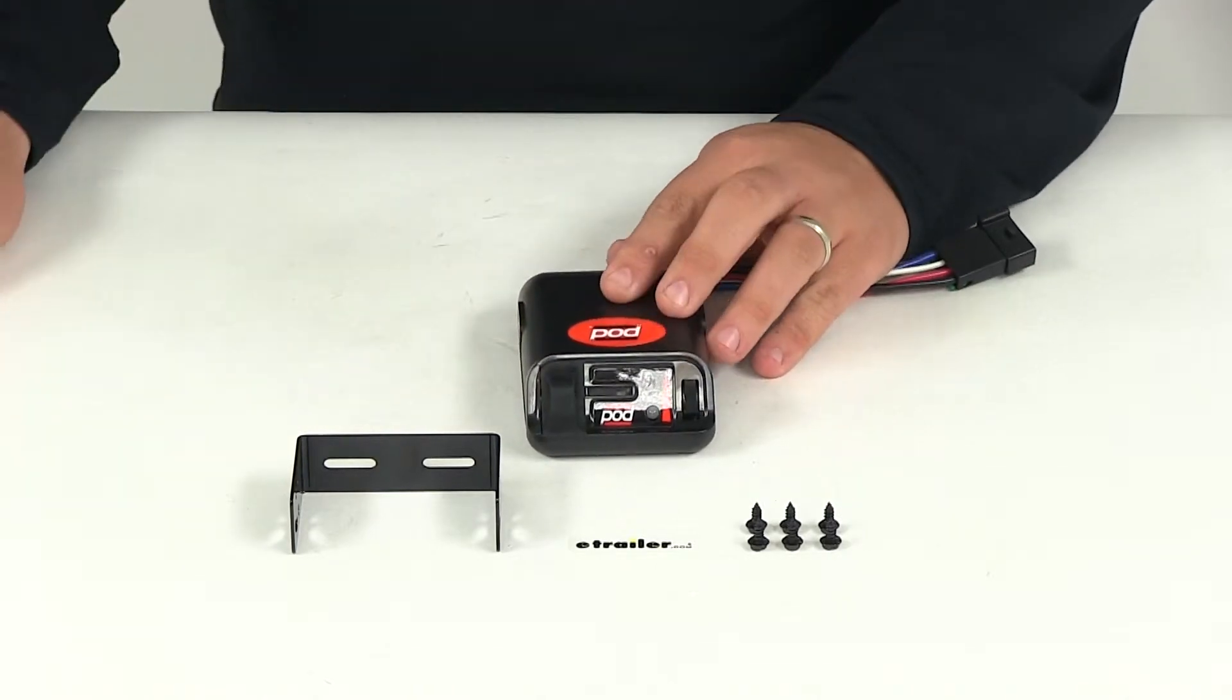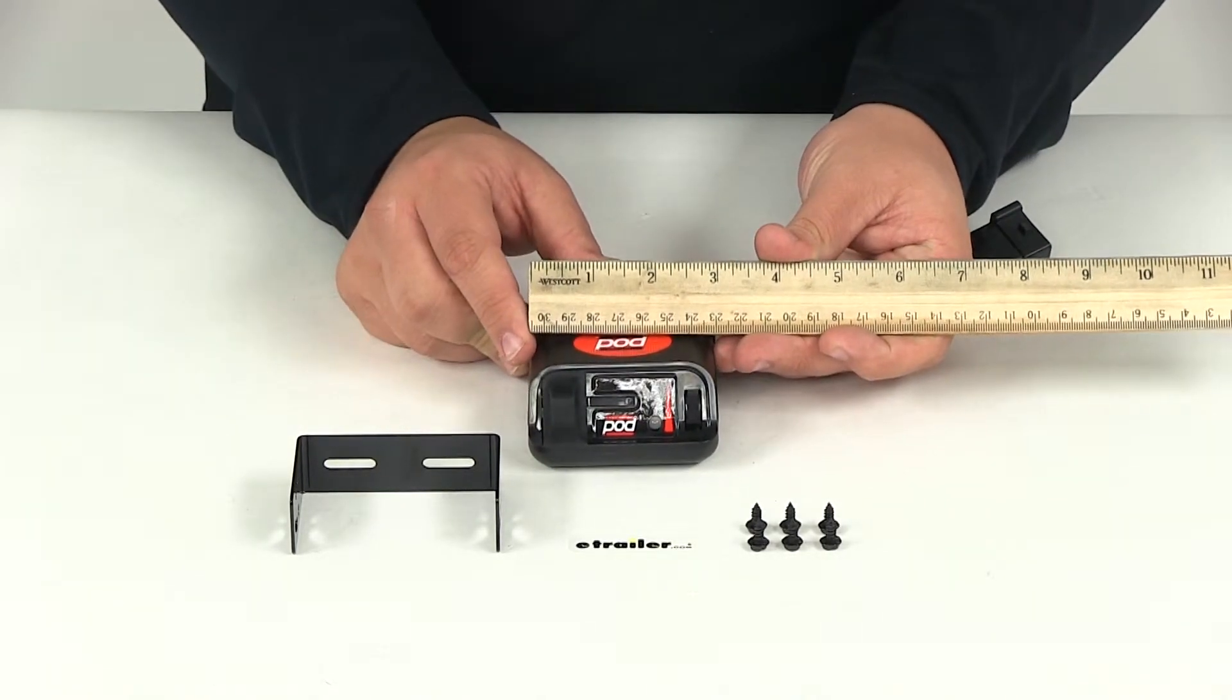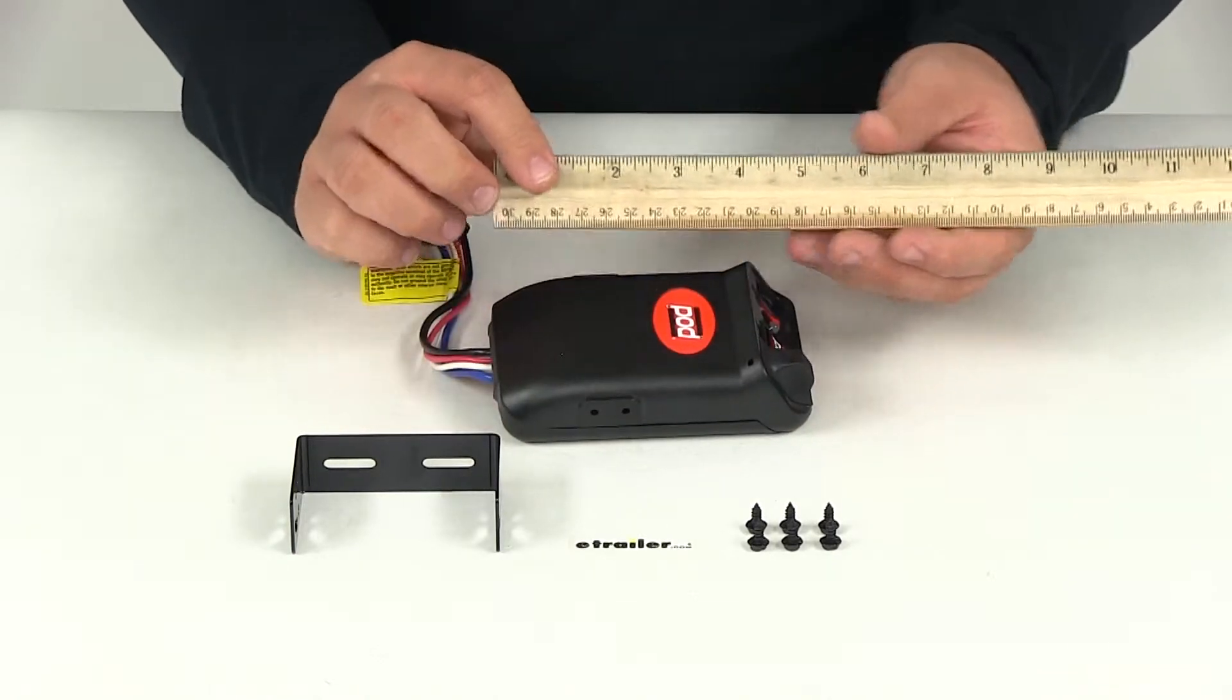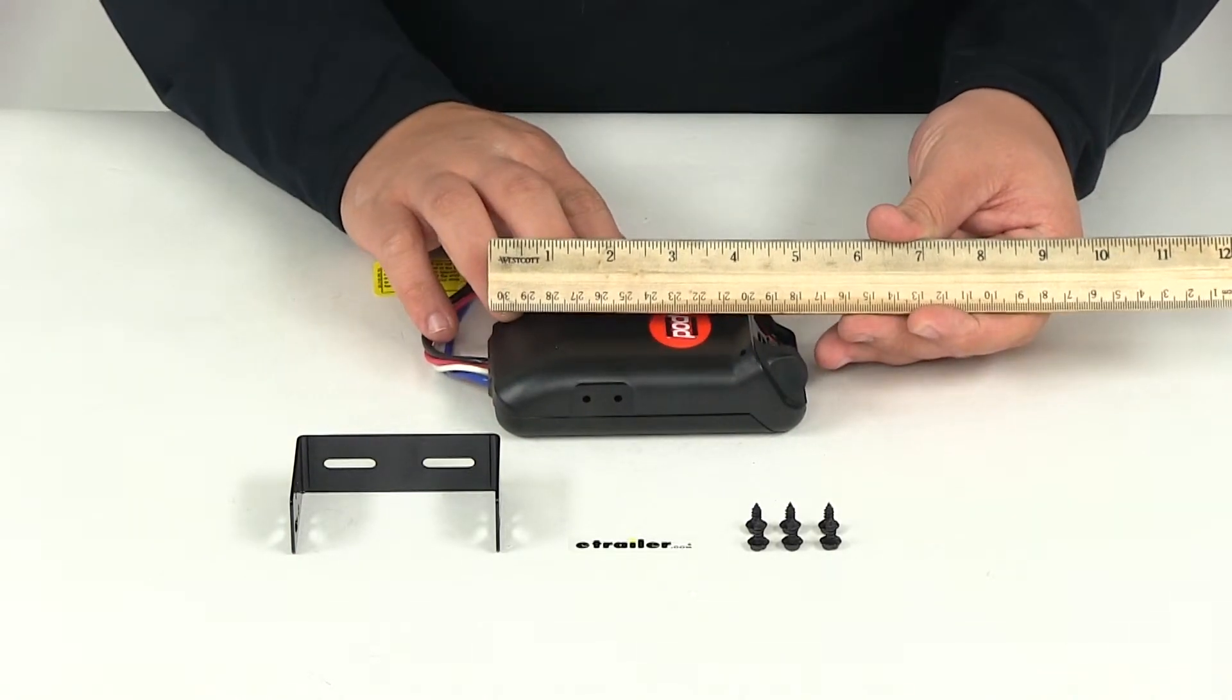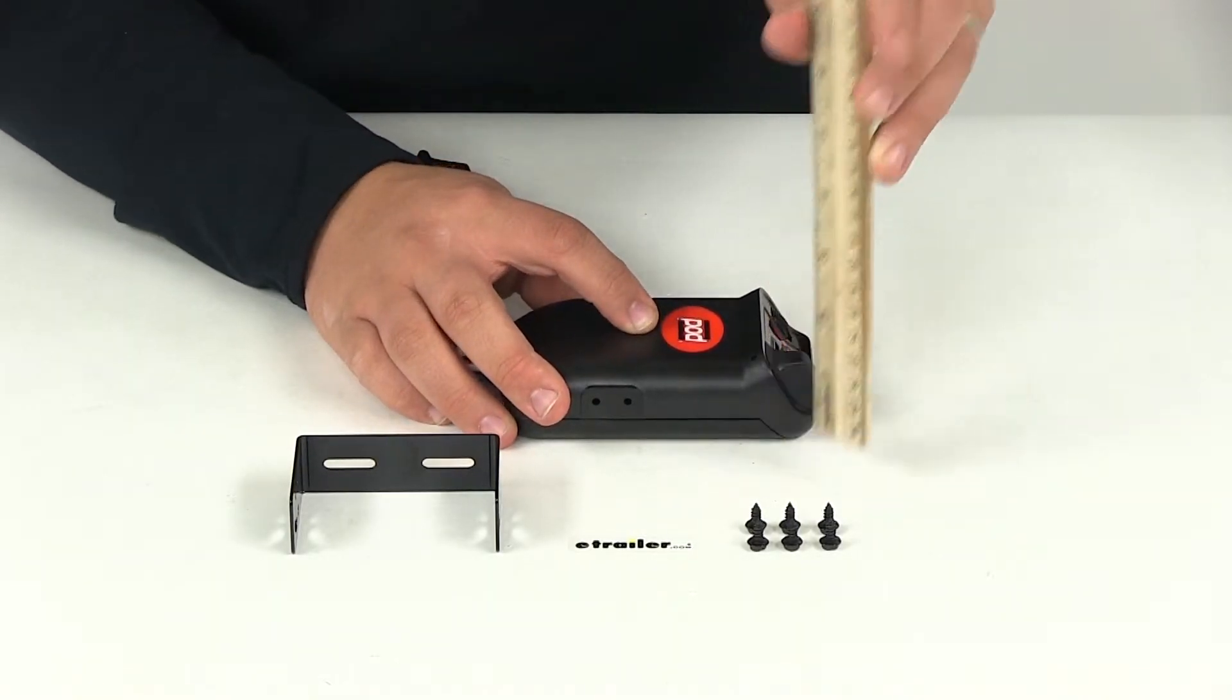To go over the dimensions of the actual brake controller, it's got a width of right at three inches and then an overall length of five inches, and it stands about an inch and a quarter in height.